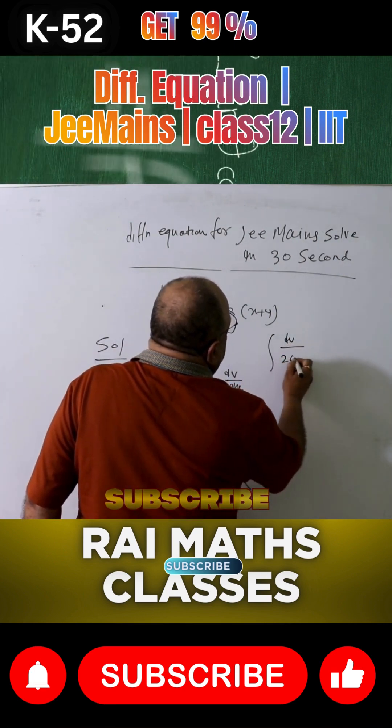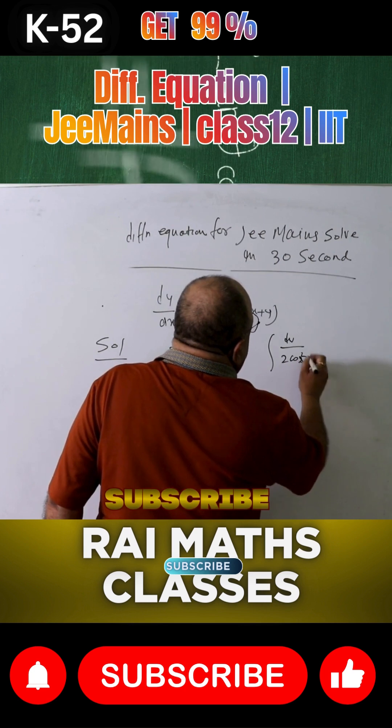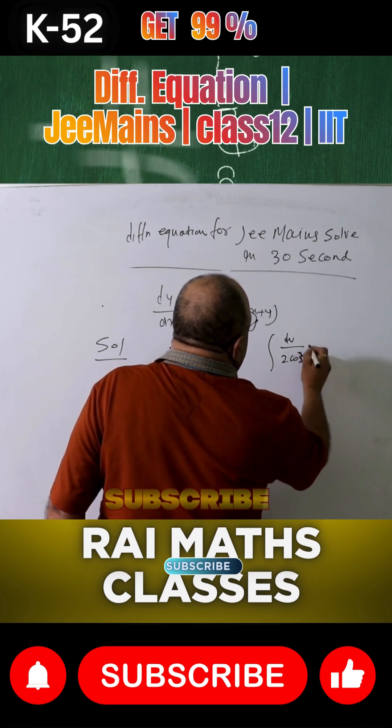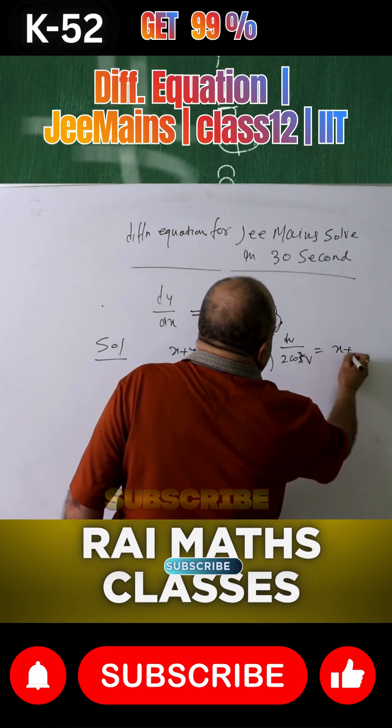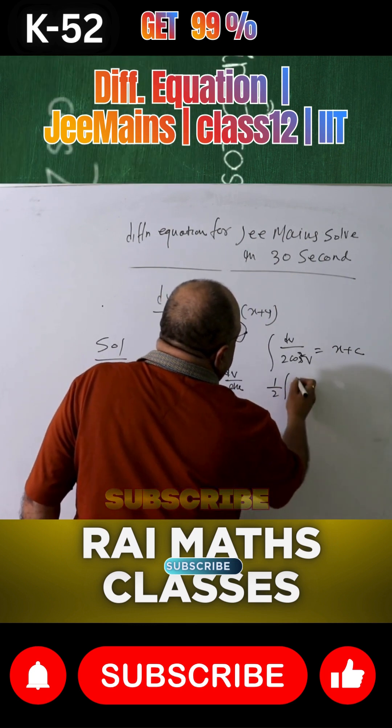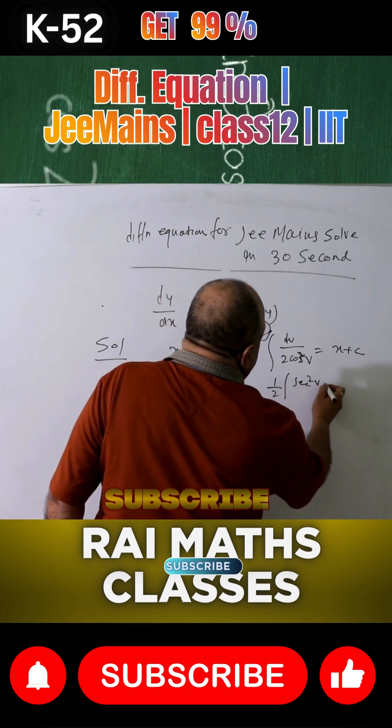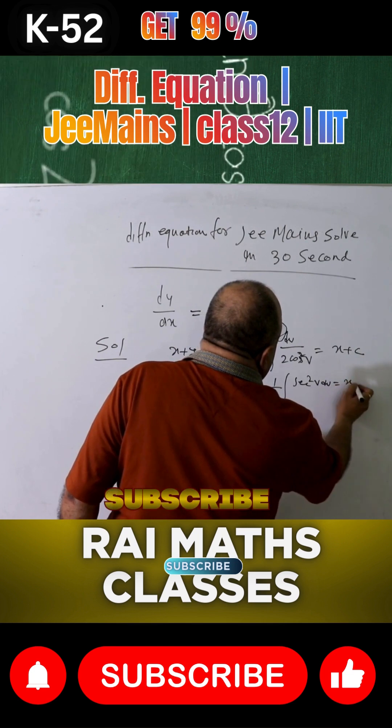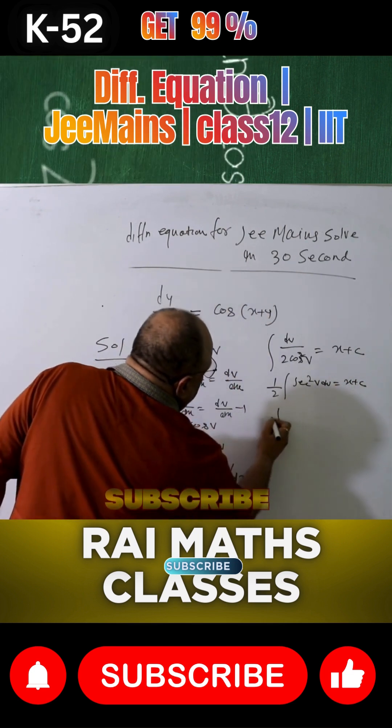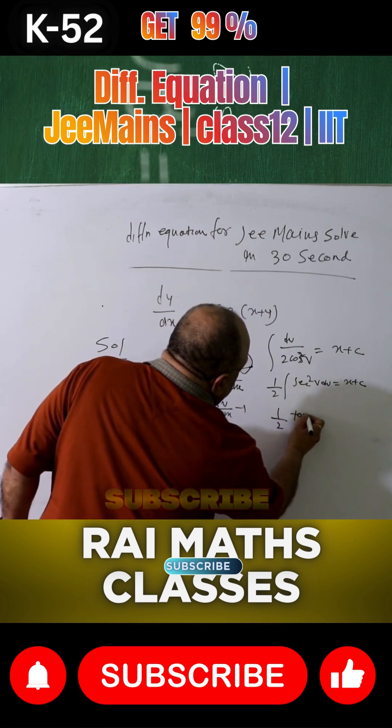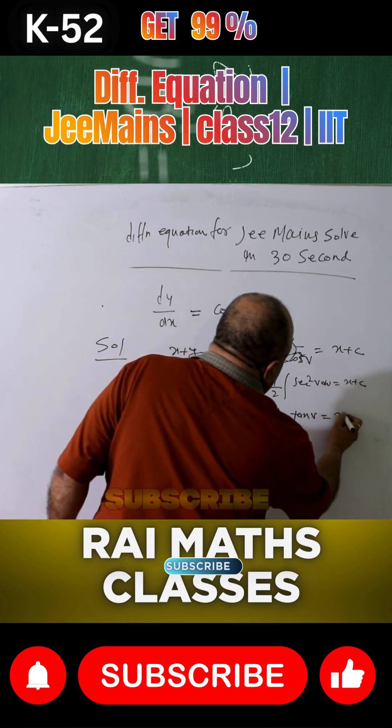1 plus cos v here. Using the identity, we integrate and get tan v by 2 equals x plus some constant c. Here, this condition.